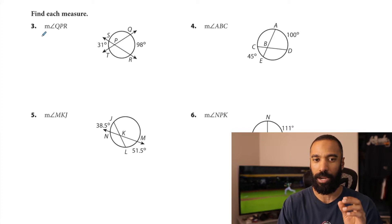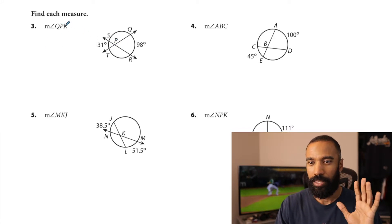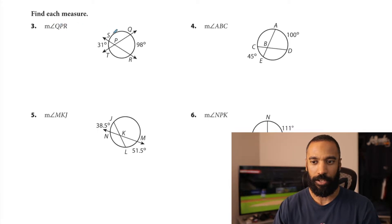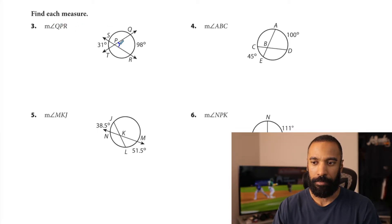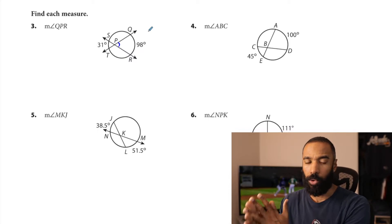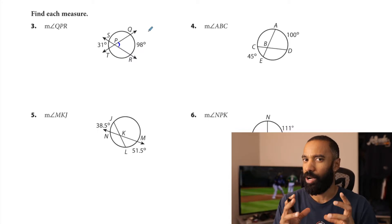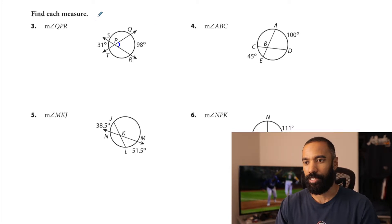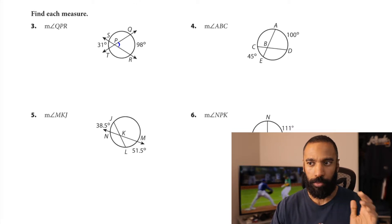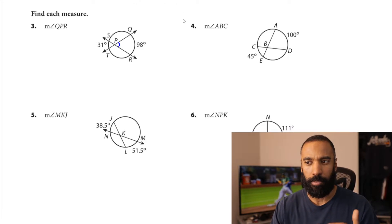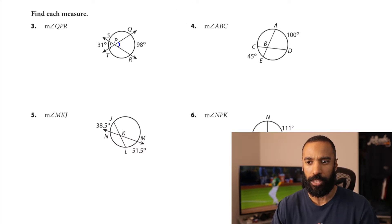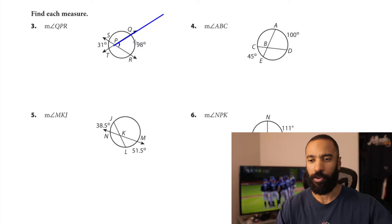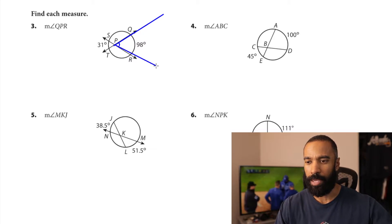So the first four problems that we're looking at right here — they're asking us to find certain measures. Find the measure of angle QPR right here. Now, this angle is clearly not a central angle nor an inscribed angle. It's not an angle on the circle or on the center. It is somewhere in the circle, not necessarily on the center. What I want to do with you for a brief moment before we actually begin the problem is look at it almost as if it was an inscribed angle.